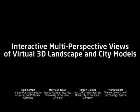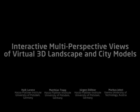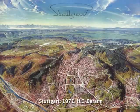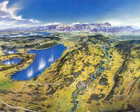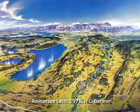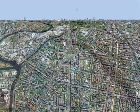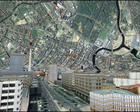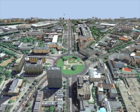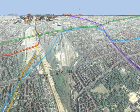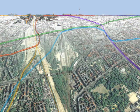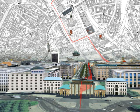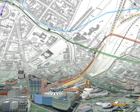Based on principles of panorama maps, we present an interactive visualization technique that generates multi-perspective views of complex spatial environments such as virtual 3D landscape and city models. Panorama maps seamlessly combine easily readable maps in the foreground with 3D views in the background. Such non-linear, non-standard 3D projections enable novel focus and context views of complex virtual spatial environments.